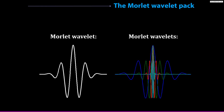These Morley wavelets are related to each other by having different frequencies. This is a lower frequency wavelet, in green is a higher frequency one, and in cyan you can see this very high frequency wavelet.